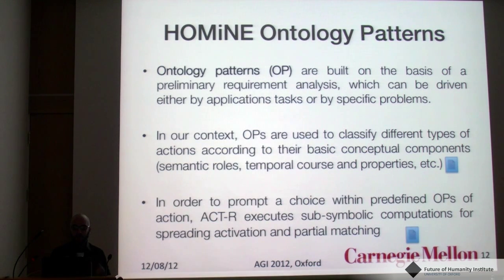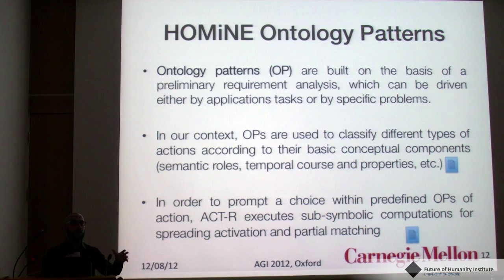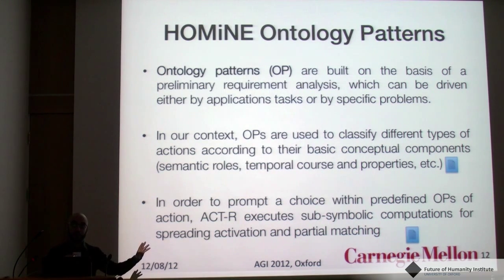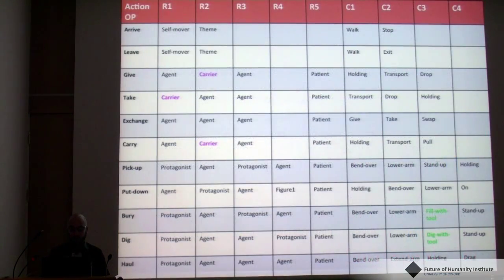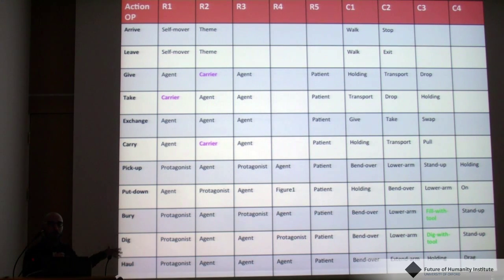These schemas can be used to prompt a choice within what we understand from the environment. We have basic movements detected from the computer vision system, and then using ACT-R's spreading of activation and partial matching, together with these general schemas, we can generalize over the specific input and reason over it — trying to understand what is going on in terms of common sense or human-level understanding. This is a schema for some of the core ontology patterns we identified.